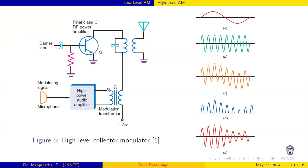When the message signal is zero, the output is also zero. When the message signal appears, the transistor works accordingly. Now let's analyze this portion: this transistor is the final class C amplifier — it is a class C amplifier.